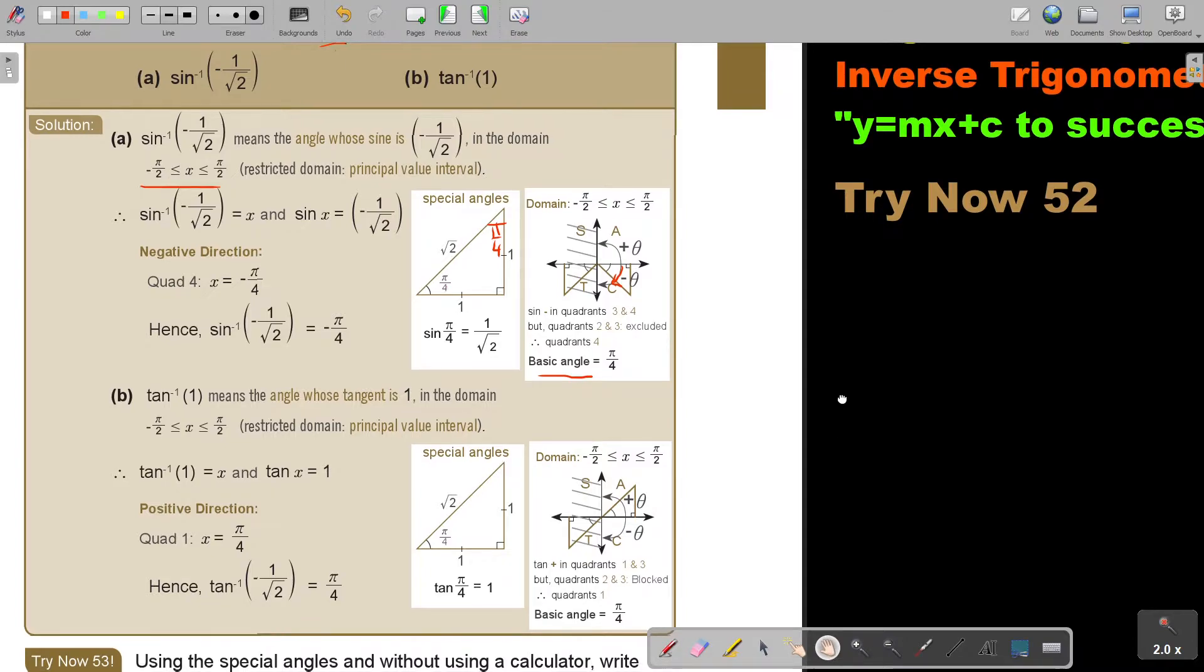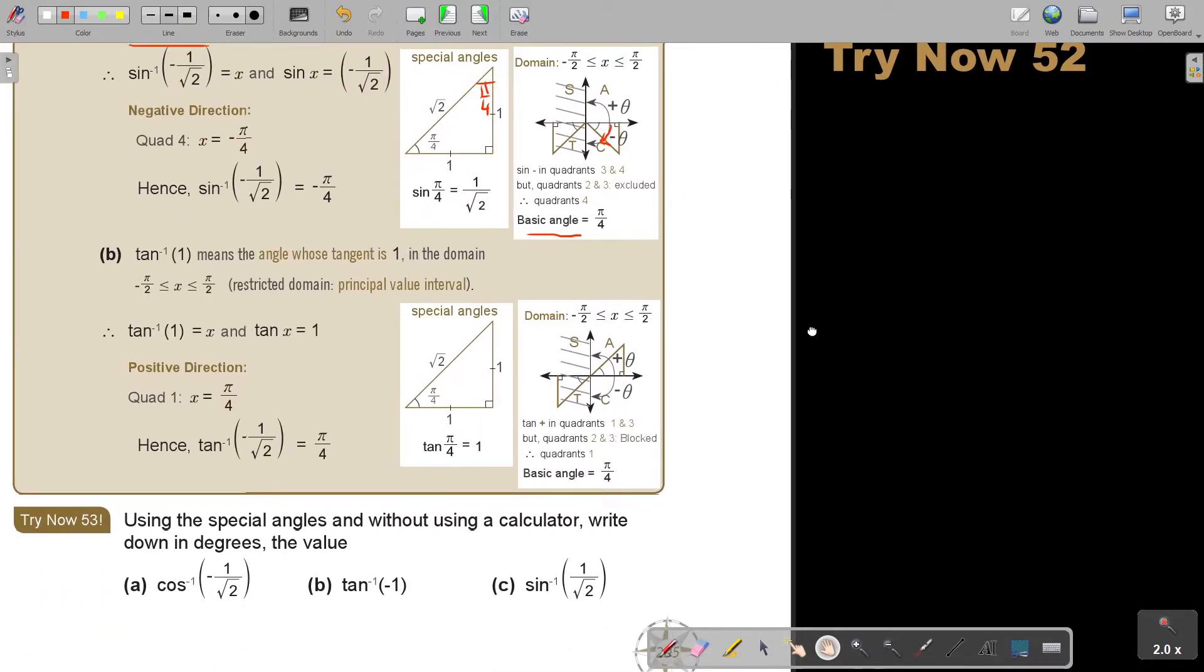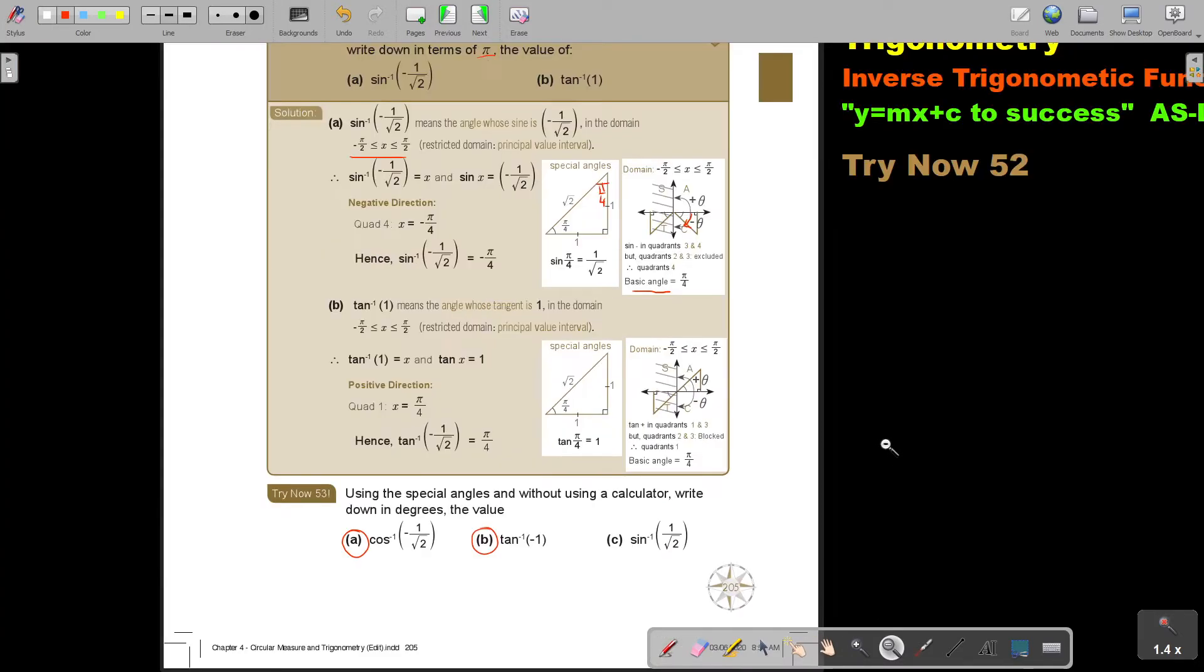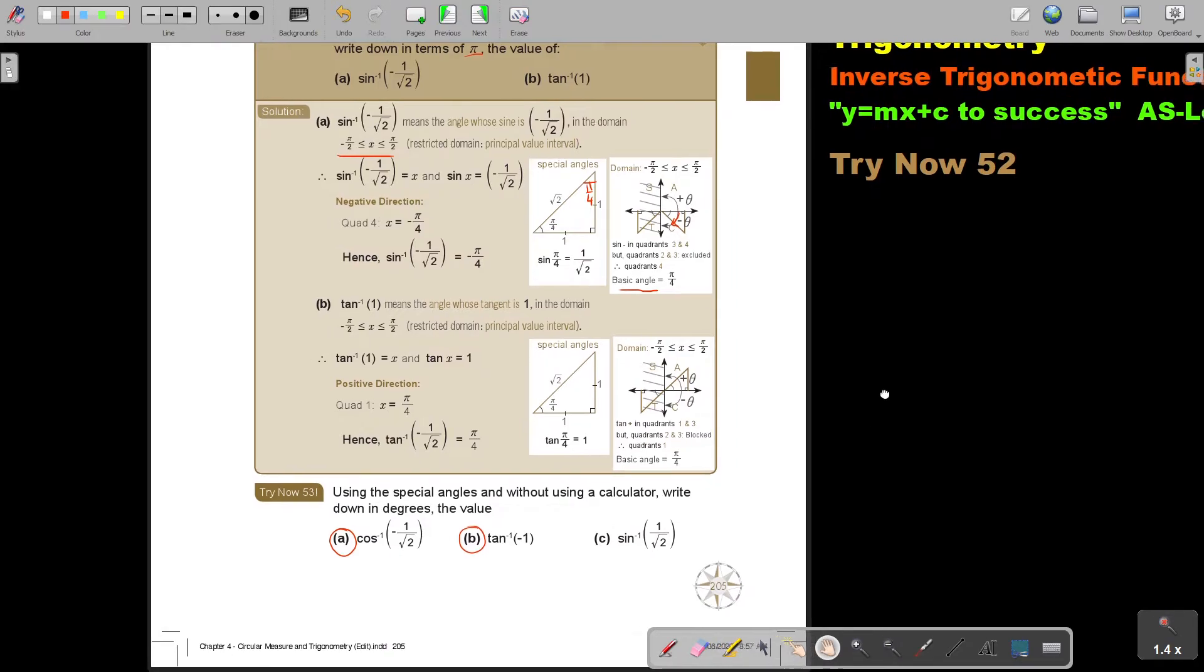I want you to stop the video. And I want you to do, I want you to do a cos. Cos is a bit different than sin and tan. Because it's going 0 to 180. That is the principal value interval. I want you to do try now 53, number A and B. And again, you can continue the video as soon as you are finished.